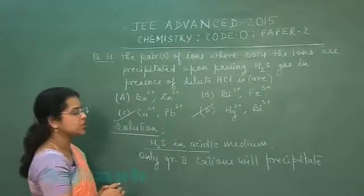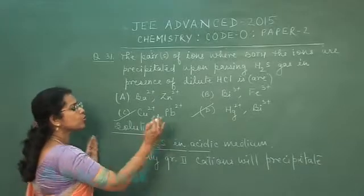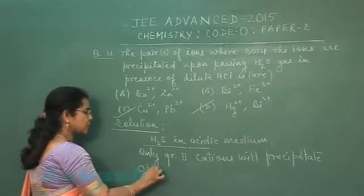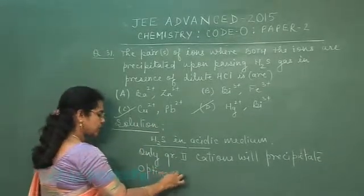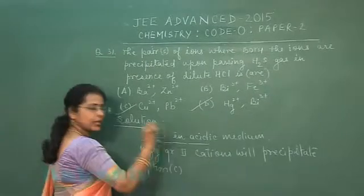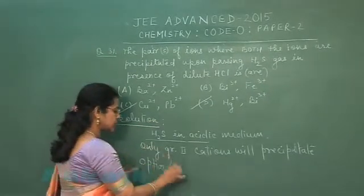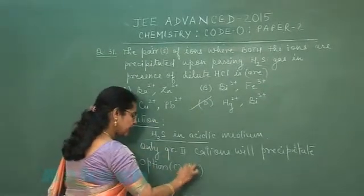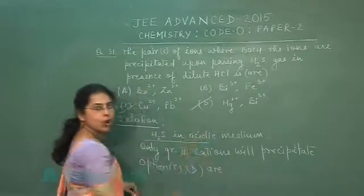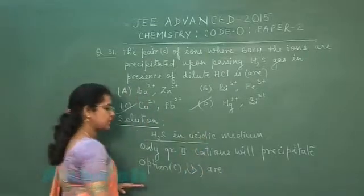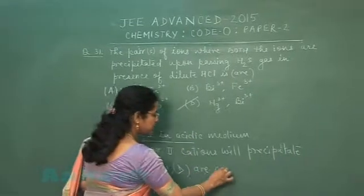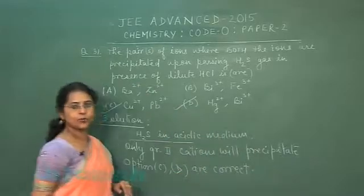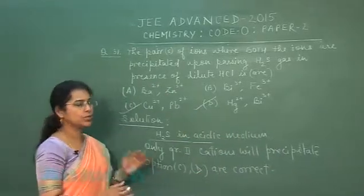They will also precipitate. Looking at all four options, the Group 2 cations in options C and D will form precipitate. So these two options are the correct answers to the question.